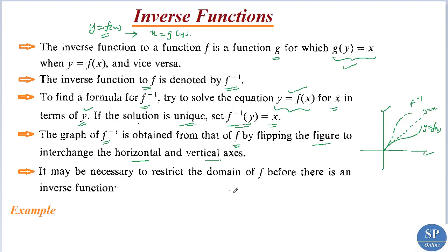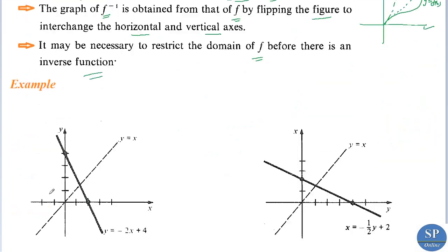Maybe we need to restrict the domain of f before there is an inverse function. For example, suppose we have the function y equal to minus 2x plus 4. The graph of this function: when x equals 0, we have y equal to 4; when y equals 0, we have x equal to 2. So this will be the graph of the function y equal to minus 2x plus 4.